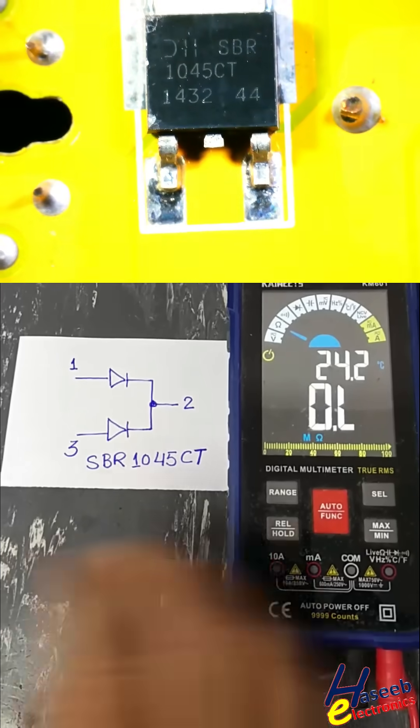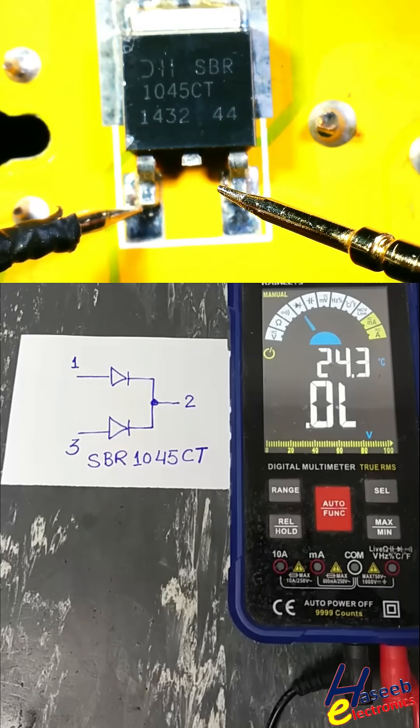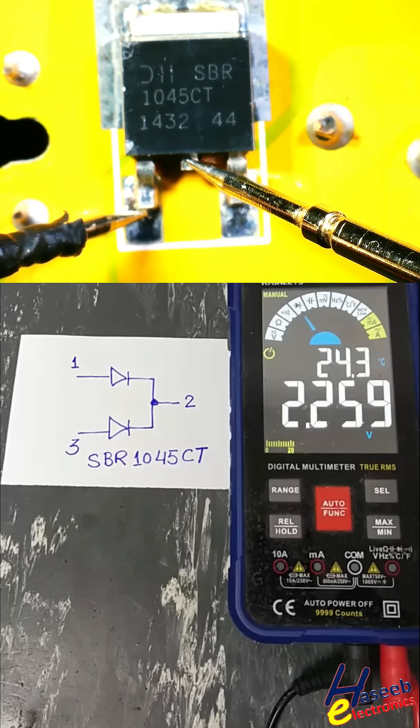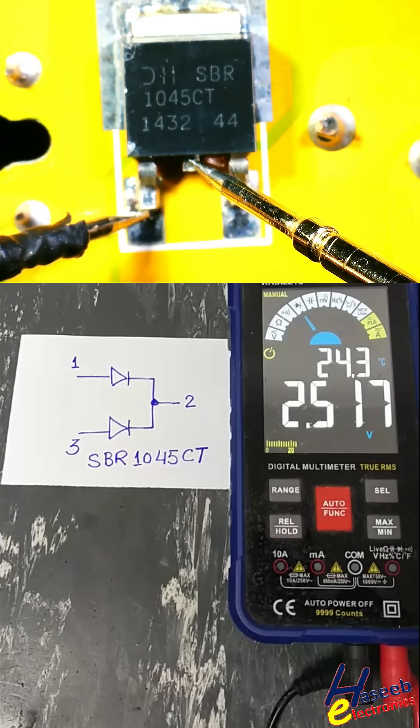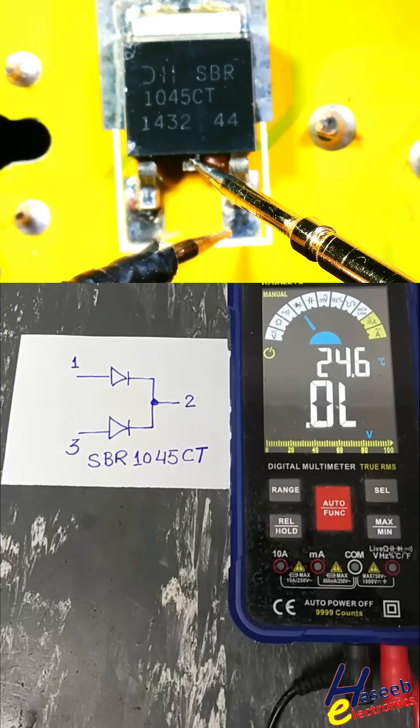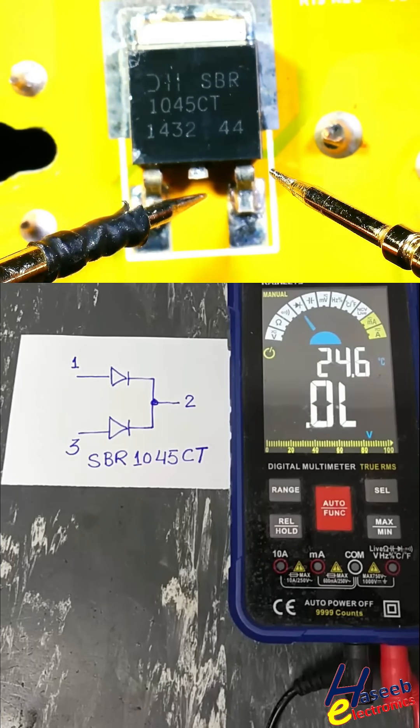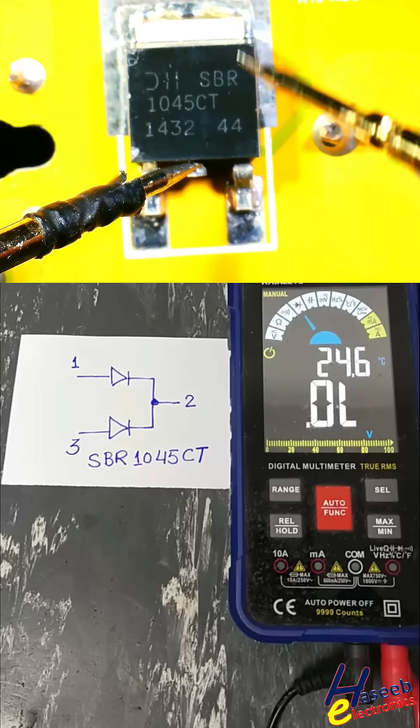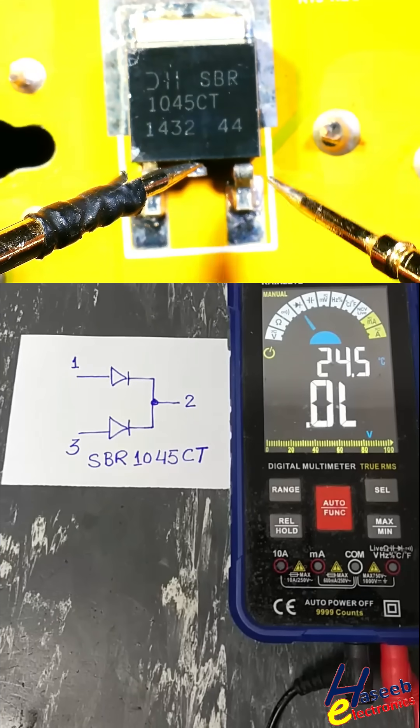It is Schottky rectifier. Black lead at anode, red lead at cathode - it is showing some capacitor charging voltage from both sides. Black lead at cathode center pin, here or here.